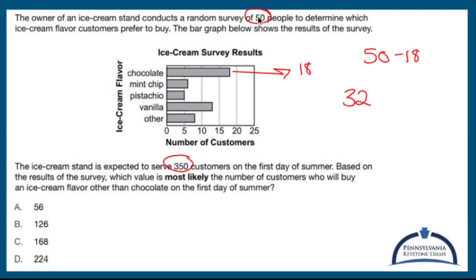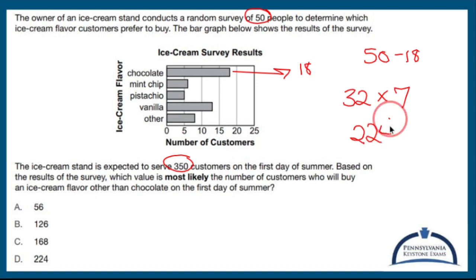This is 50 people and I'm expecting 350 people. 350 people is 7 times 50. So 32 times 7 is going to be what I should expect — the amount of people that will get the other flavor. 32 times 7 is 224, and that's the answer — so that's D.